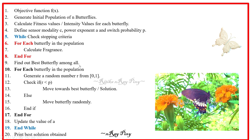For each butterfly in the population, we generate a random number r, which is a normally distributed random value between 0 and 1. We check whether the random value r is less than p or not. If this condition is true, we move the butterfly toward the best butterfly or solution; otherwise, we move the butterfly randomly. After that we update parameter a and repeat this loop until the stopping criteria is matched. Once the stopping criteria is matched, we display the best solution obtained.